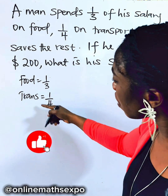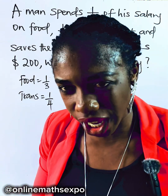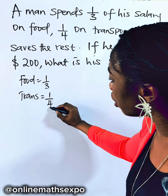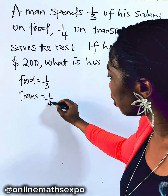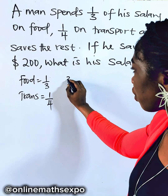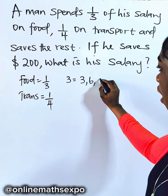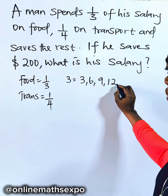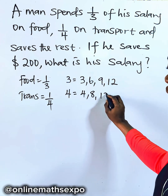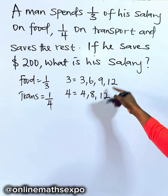Can we know the total number of parts this money was shared into? To find that, we need the common denominator of three and four. Looking at multiples of three: 3, 6, 9, 12. And multiples of four: 4, 8, 12. The lowest common denominator is 12.